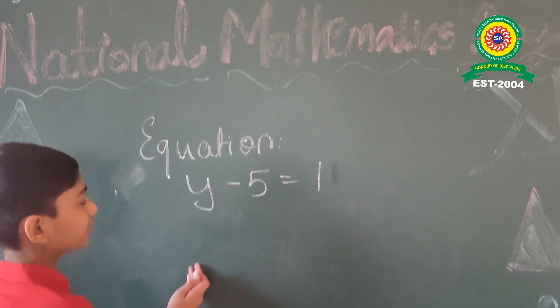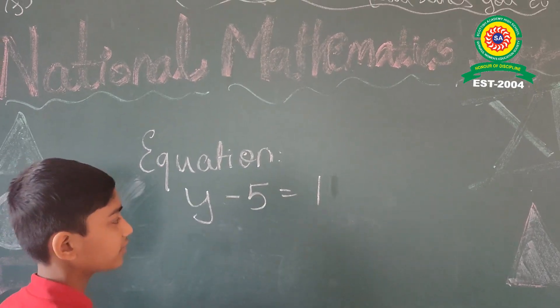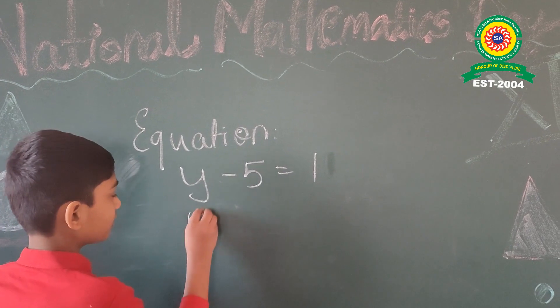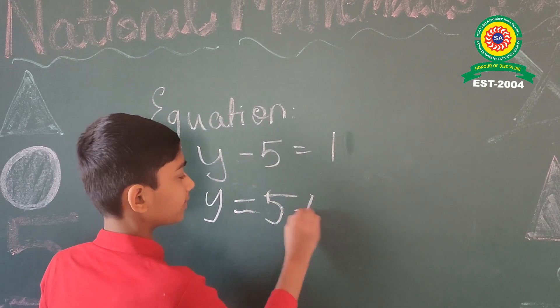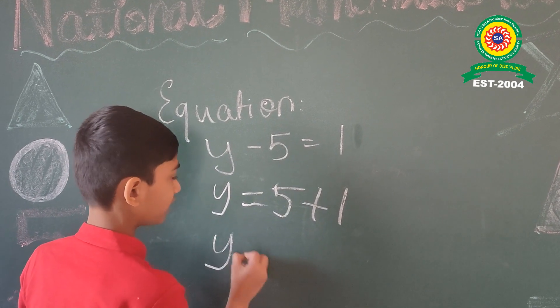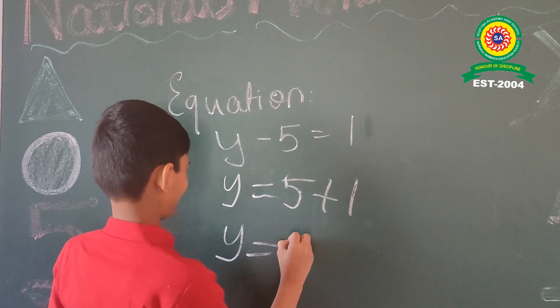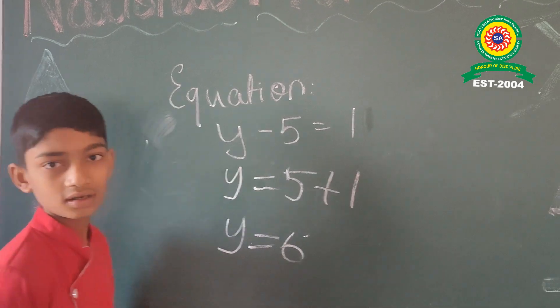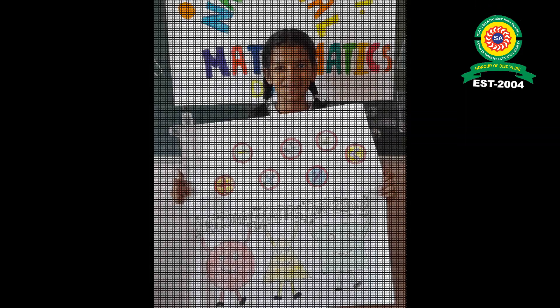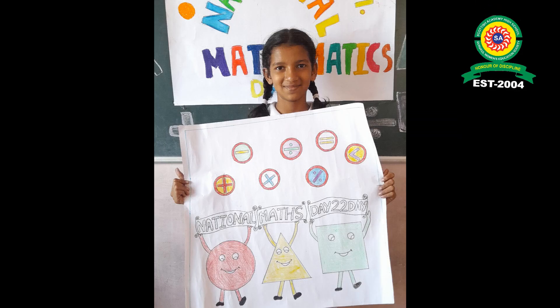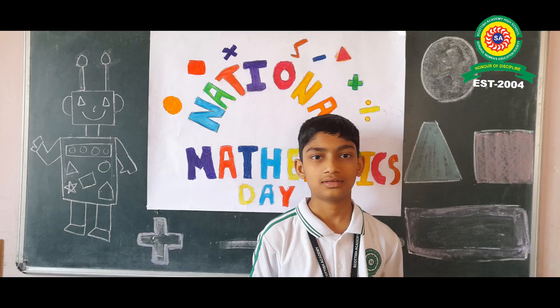We find the equation of y minus 5 equals 1. y is equal to 5 plus 1. y is equal to 6. y is equal to 7.